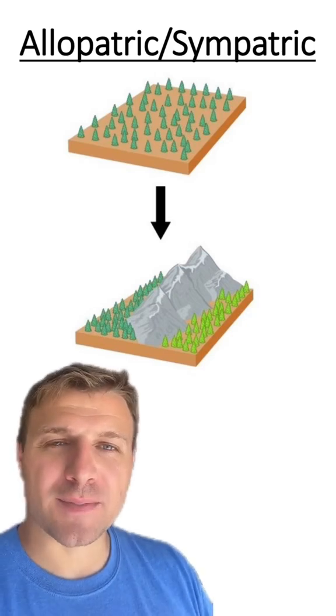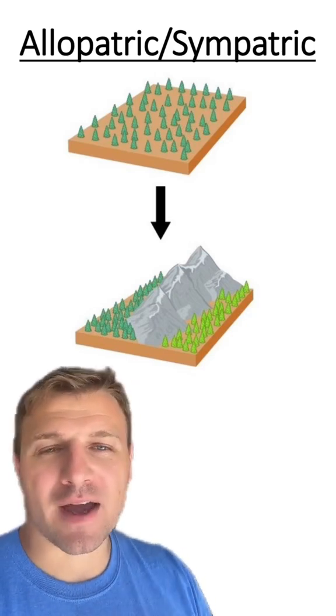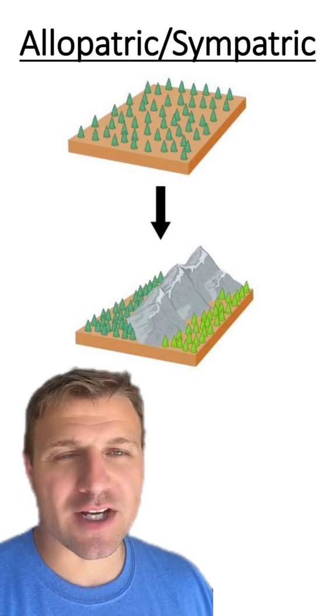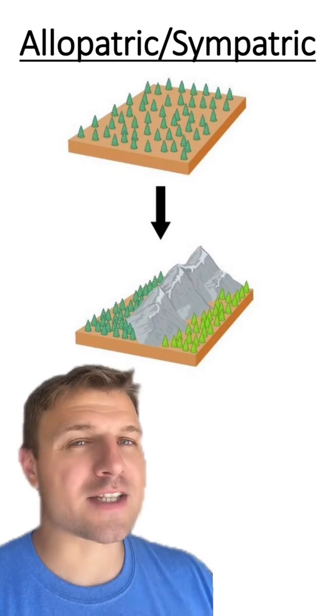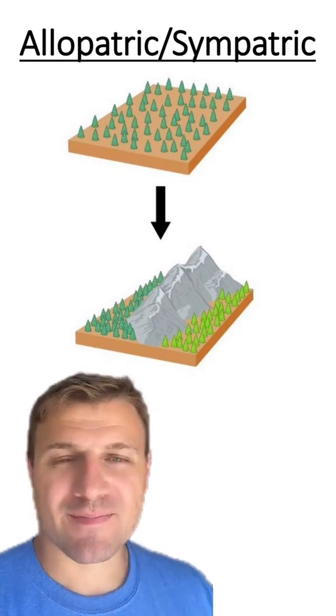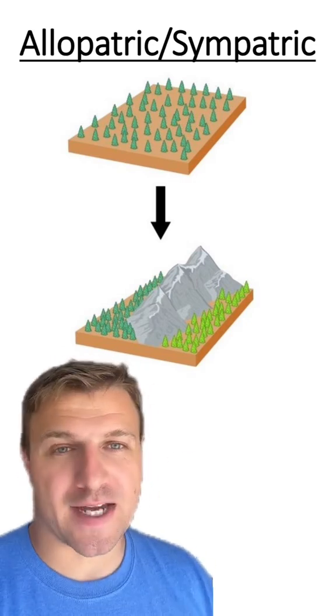You can see in our first example the species of trees has been divided by a mountain and after many generations it separates into two distinct species. So what type of speciation is this? This is an example of allopatric speciation.